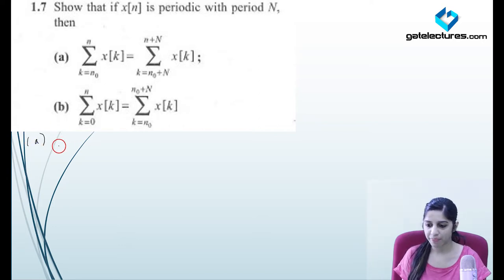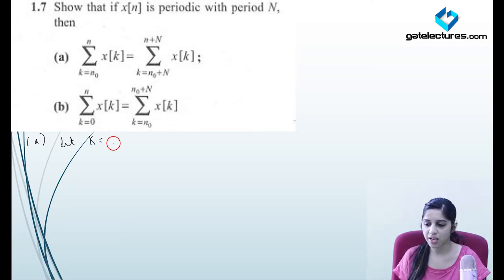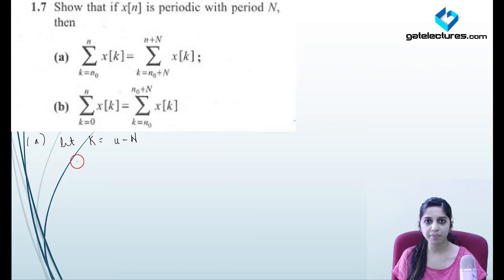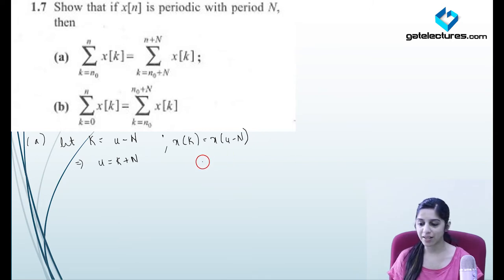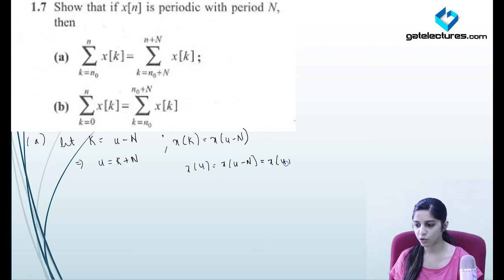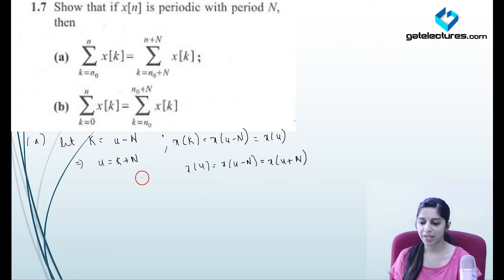Now we're going to prove this mathematically. I'm replacing k with a new variable u, where k equals u minus N. So u becomes k plus N, and x[k] becomes x[u minus N]. Since the signal is periodic with period N, by the definition of periodicity, x[u] equals x[u minus N] equals x[u plus N]. So x[u minus N] is going to be equal to x[u].